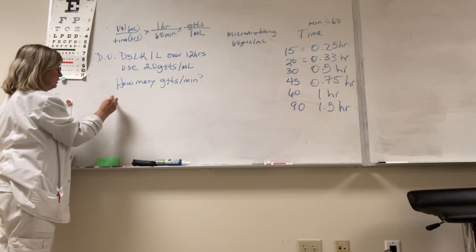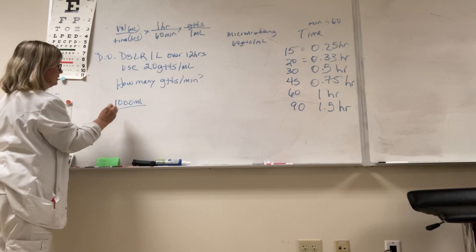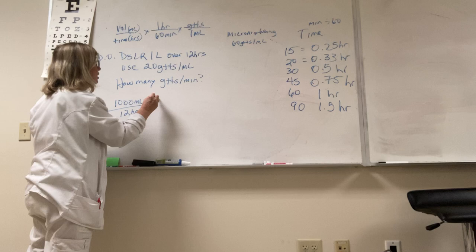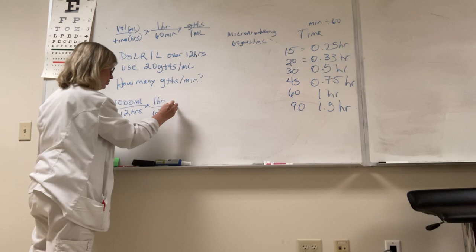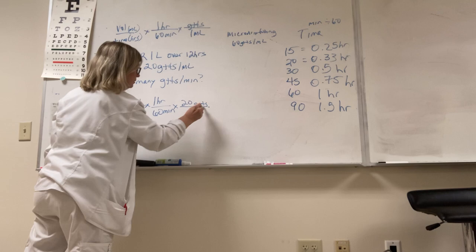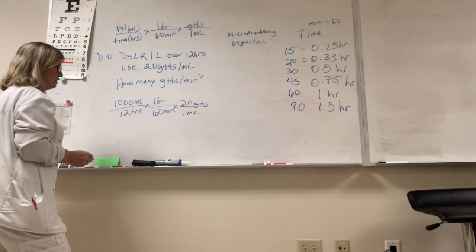We're going to go back to our formula. Our volume in milliliters is a thousand milliliters - if you put one you are going to get this wrong. The time in hours is 12 hours. And if you put one liter here, Mrs. Jacobs is going to have no sympathy, so I'm just letting you know. One hour and 60 minutes - because she knows you know your conversions. And then our drop factor - so now you actually have to go into the body of the question and look for your drop factor. The tubing is 20 drops per milliliter.